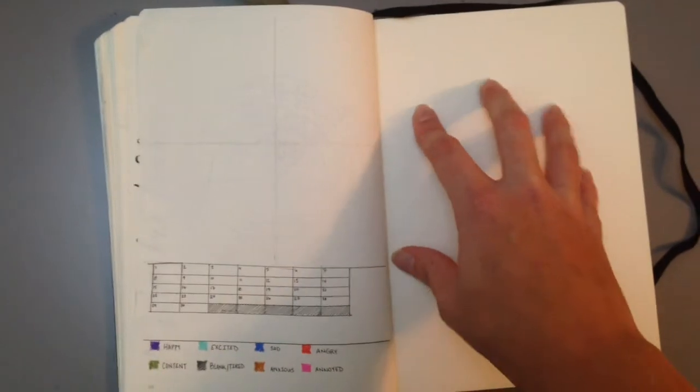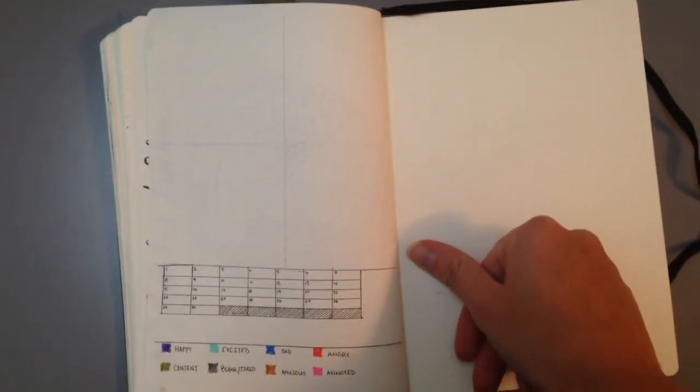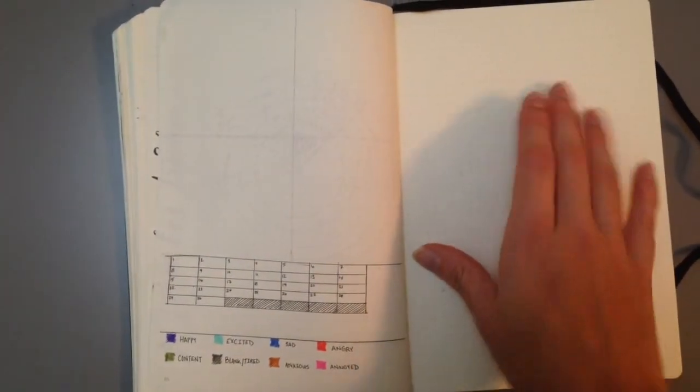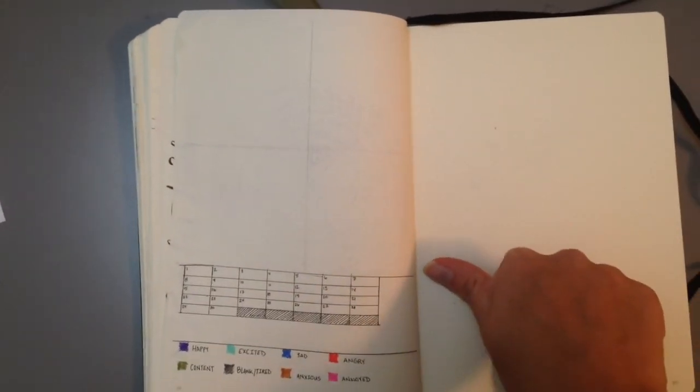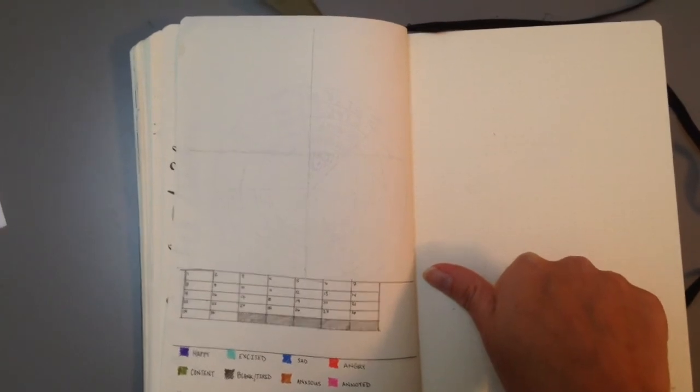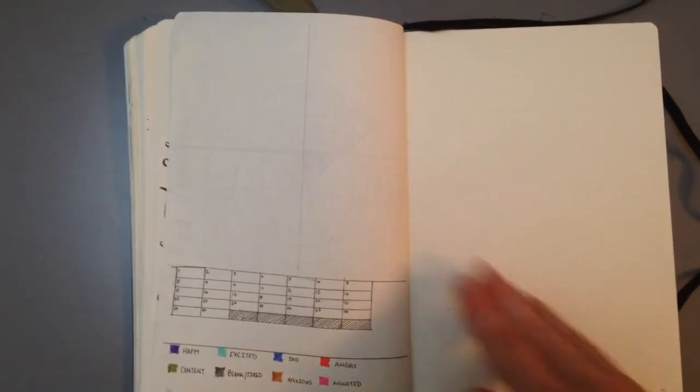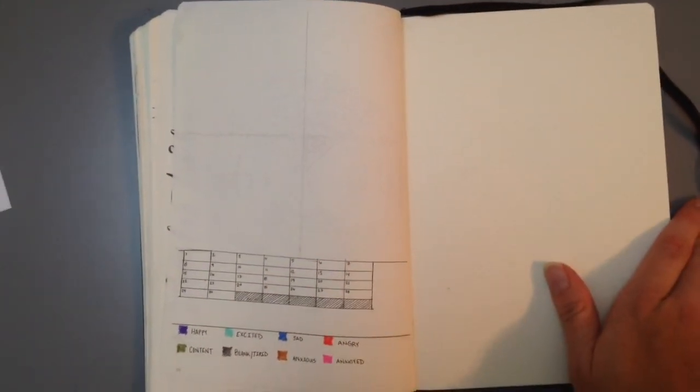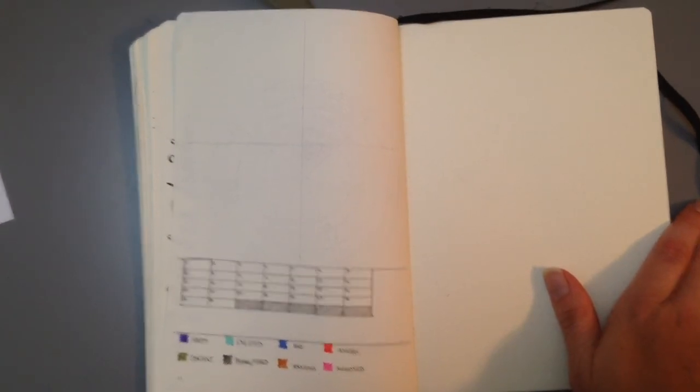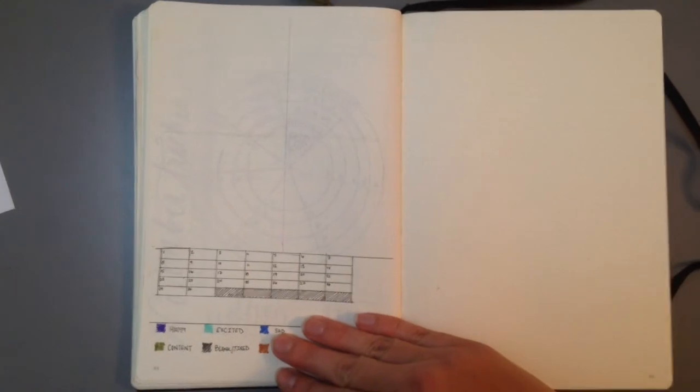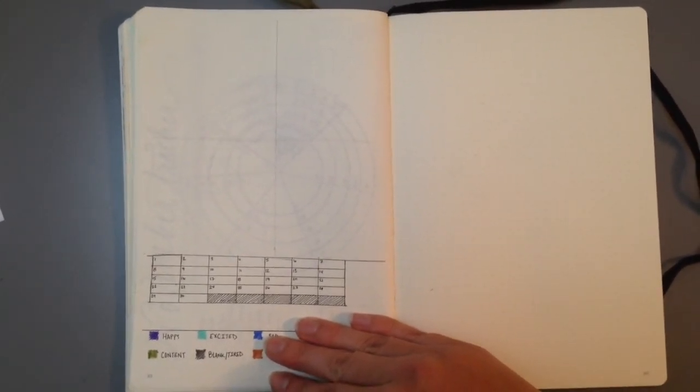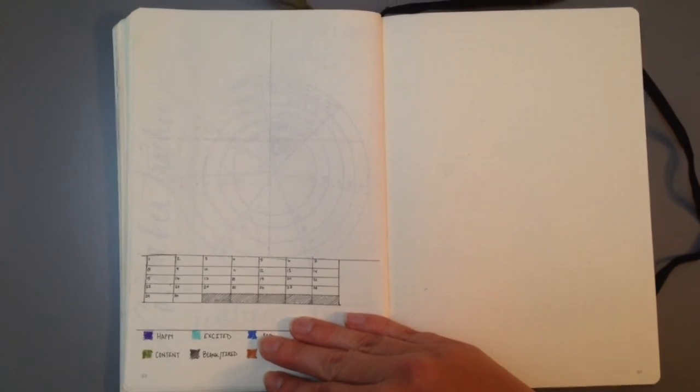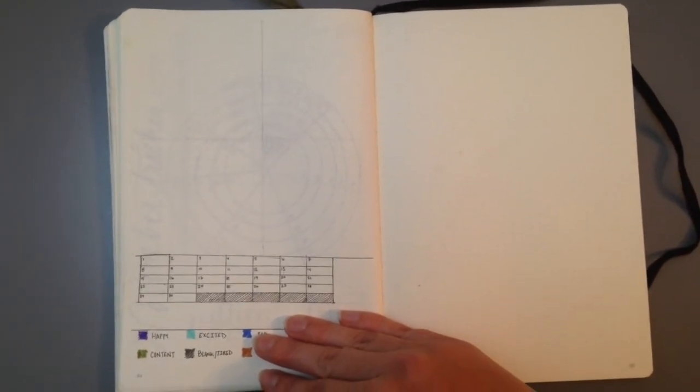I might end up participating in NaNoWriMo and doing a spread for that, but right now I'm still uncertain. And will start my weekly here unless I put in something for NaNoWriMo. So anyway, this is my November setup and I'll be doing an October review soon. So look for that and you can see how everything's getting colored in.